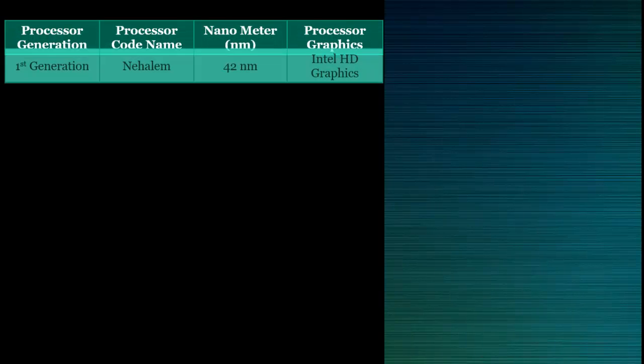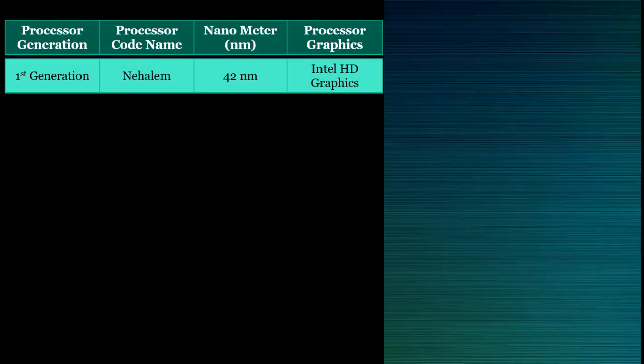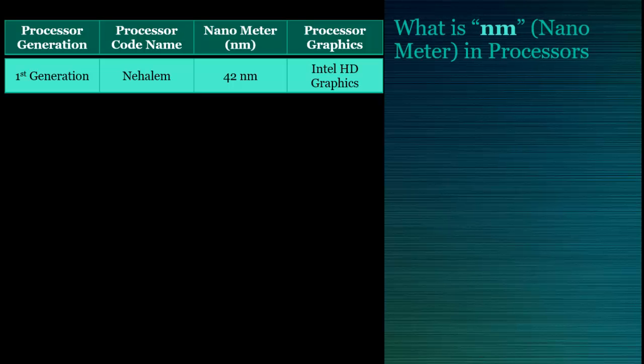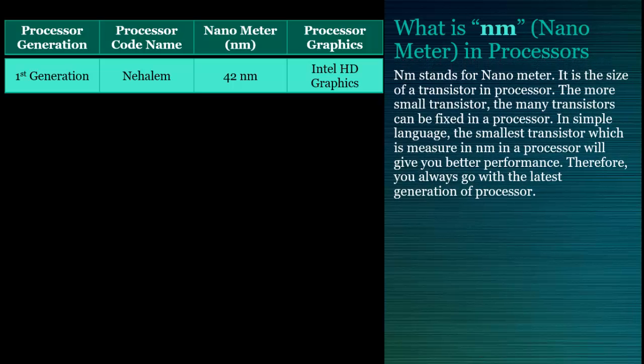Many times you have heard that first generation processors are 42 NM, second generation processors are 32 NM, and so on. But what does NM exactly mean? NM stands for nanometer — it is the size of a transistor in a processor. The smaller the transistor, the more transistors can be fit in a processor. In simple terms, a smaller transistor size measured in NM will give you better performance, so you should always go with the latest generation processor.